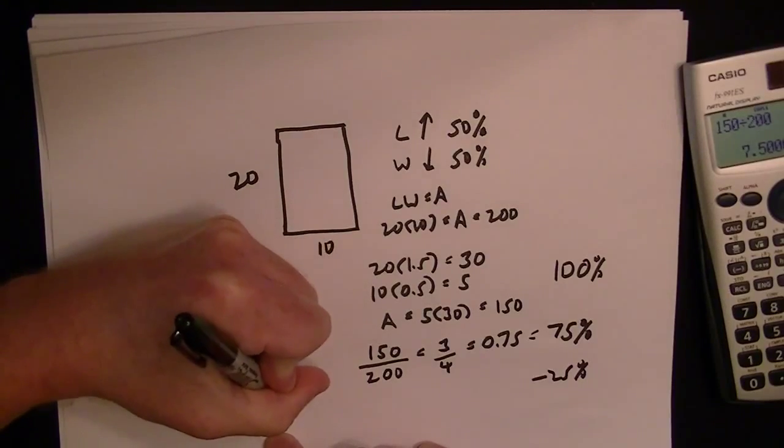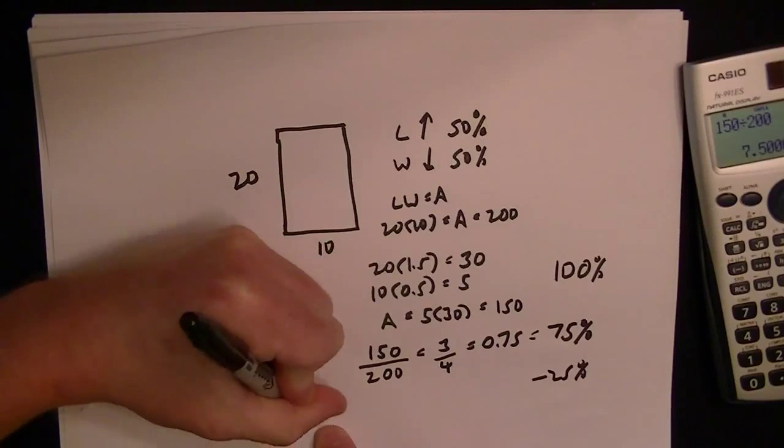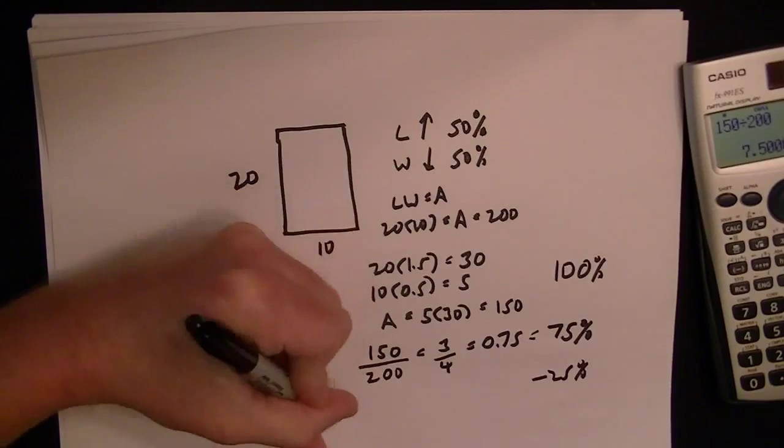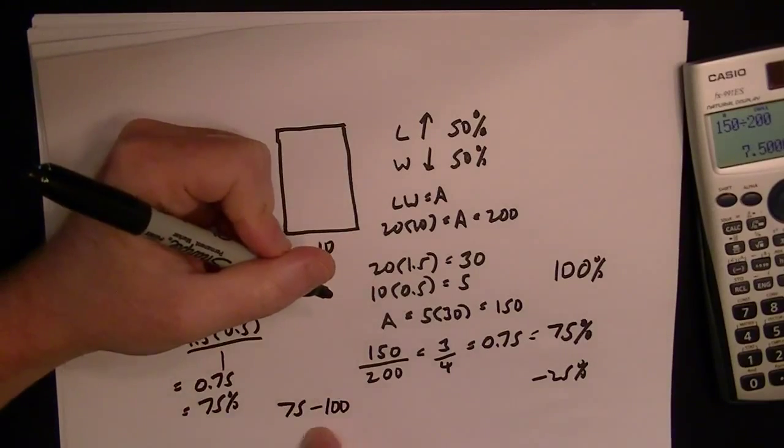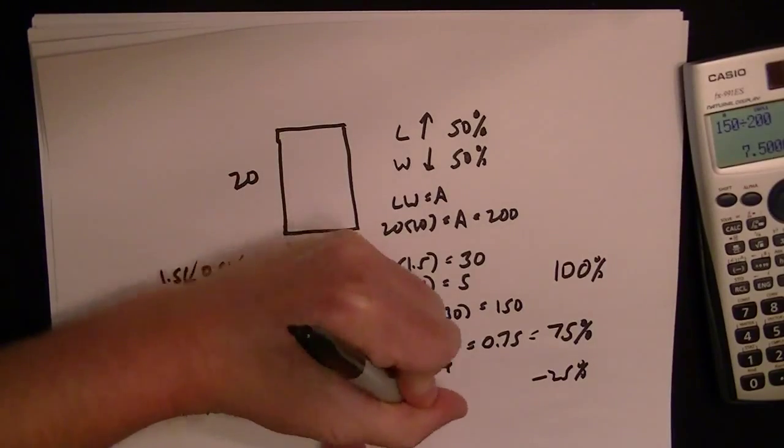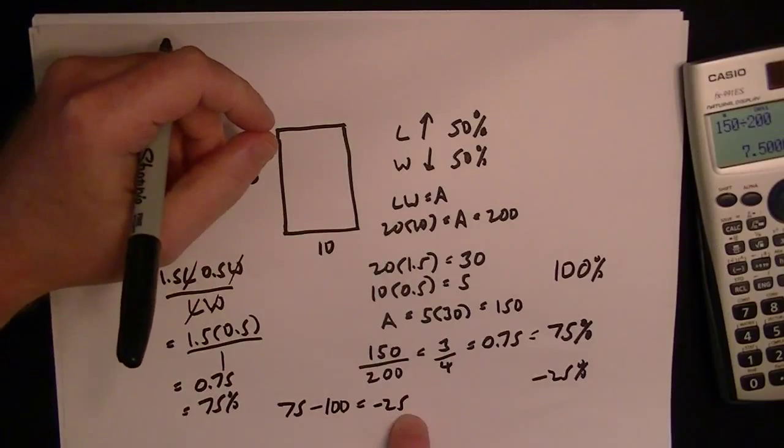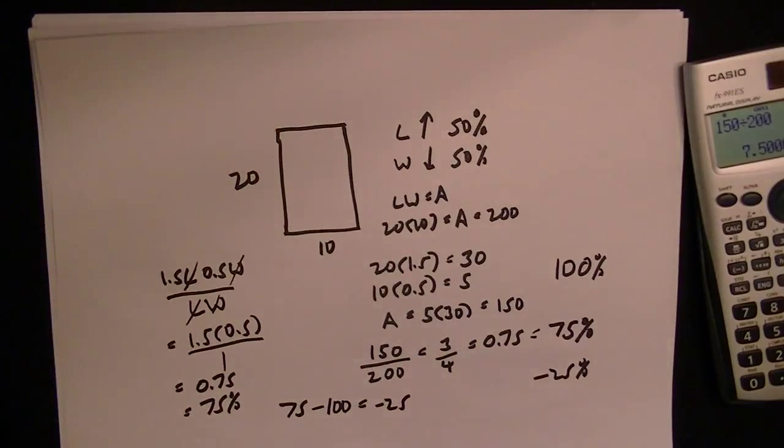If you want to compare, you can take 75 as the new size. The difference with the old size, which is considered the full thing at 100, gives us minus 25. So the difference between them is 25%.